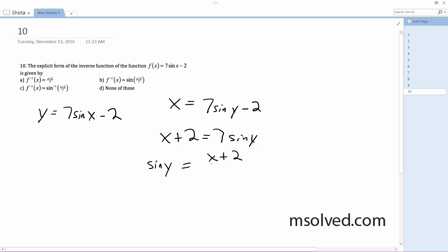x plus 2 divided by 7, and then take the arc sine of both sides. So I get y is equal to arc sine of x plus 2 divided by 7. That's it.